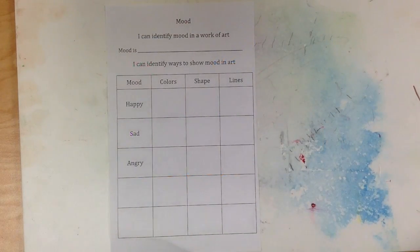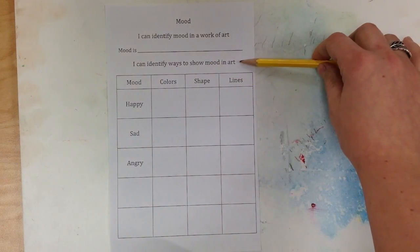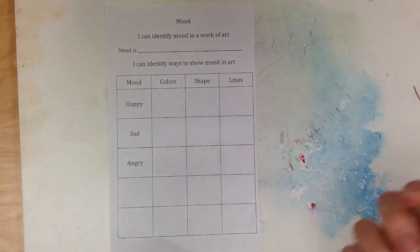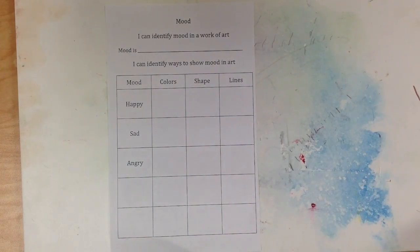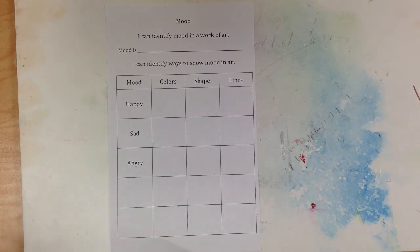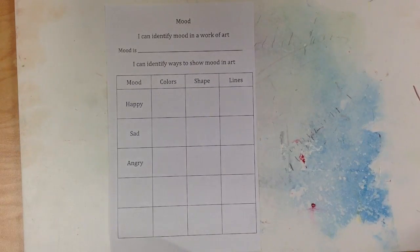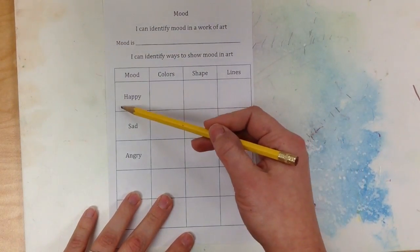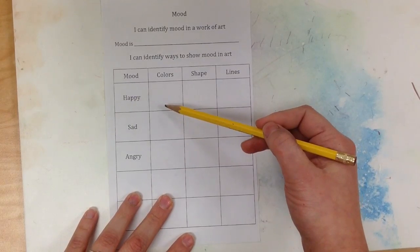Now that we know what mood is, we should be able to identify ways to show mood in a work of art. When we are creating art, we're also creating a mood. You can make art that's happy, or makes people feel happy when they look at it, or sad or angry or any of those other examples. As you're working through this, I want you to come up with different ways to show these moods.